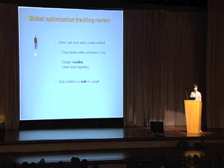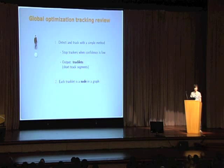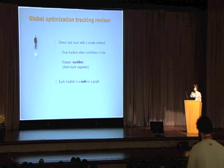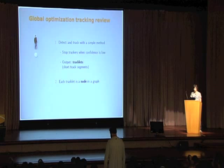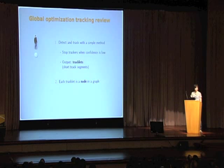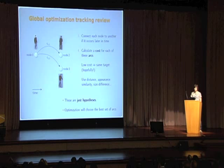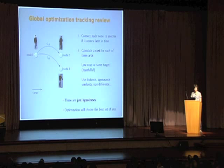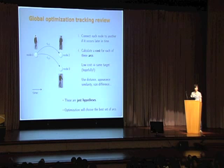The basic idea of global optimization tracking is to first obtain short track segments, or tracklets, using a simple method such as Kalman filtering with detectors. These simple trackers are not supposed to carry tracks all the way to the end — they are stopped whenever their confidence is low. The optimization then links these tracklets to estimate the long correct tracks. We represent each tracklet as a node in a graph, and create an arc connecting one node to another if it occurs later in time. The cost for each arc is calculated using metrics such as appearance similarity and distance, with a low cost indicating two nodes likely belonging to the same target.